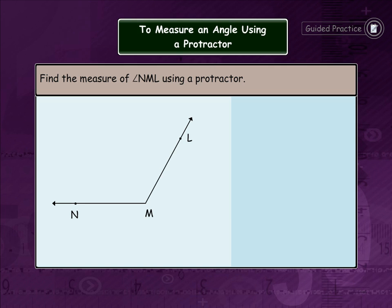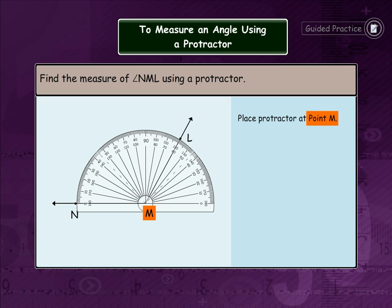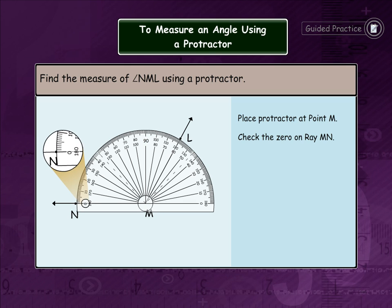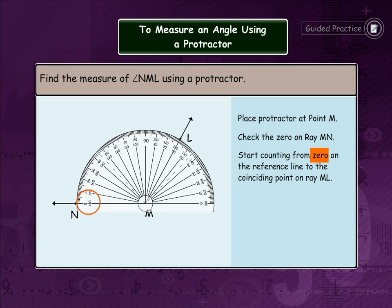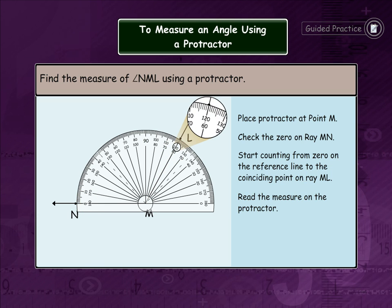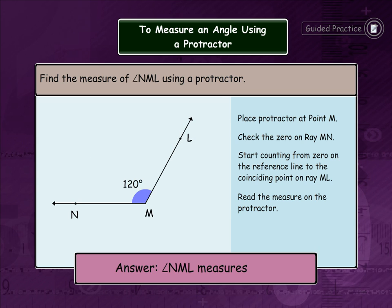Now, let's try to measure the angle in the given example. Find the measure of angle NML using a protractor. Place the protractor at point M. Check the zero on ray MN. Start counting from zero on the reference line to the coinciding point on ray ML. Read the measure on the protractor. Angle NML measures 120 degrees.